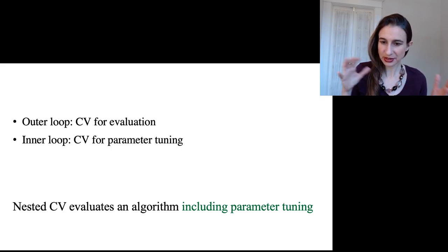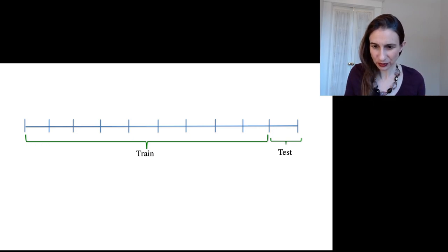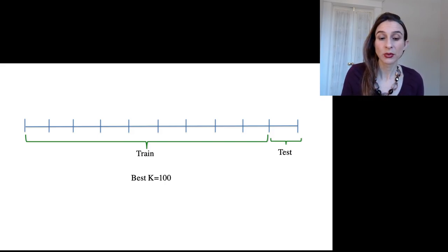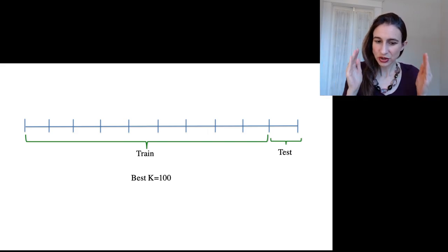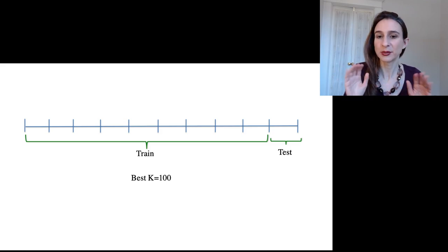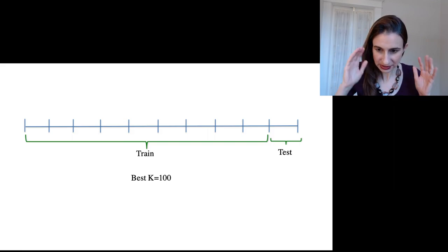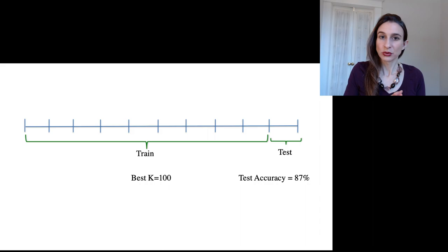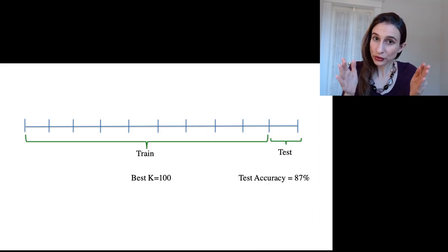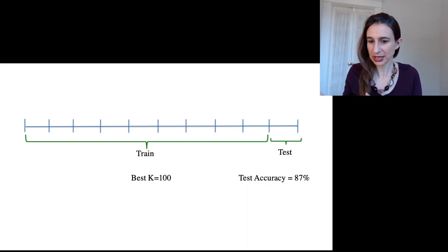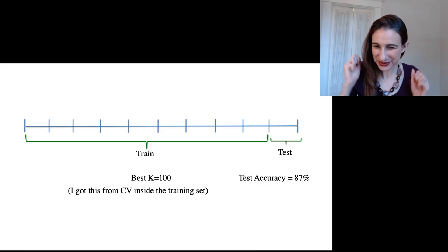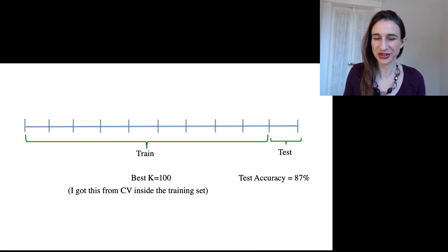Now let's add the inner loop. You're allowed to do whatever you want on the training set as long as you don't touch the test set until you evaluate. So let's say we did an inner loop where we tuned the parameter — and that inner loop was only on the training set. We find that the best k is k equals 100. We take that parameter value, train on the whole training set with it, evaluate on the test set, and get a testing accuracy of, say, 87%. That best k came from internal cross-validation inside the training set for tuning the parameter.